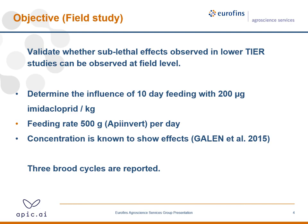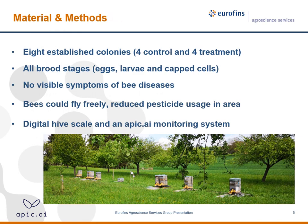We used eight hives and split them into control and treatment groups. The hives had all larval stages — eggs and larval cells. There were no visible symptoms of bee diseases. The bees could fly freely, and in the area where the study was conducted, there was reduced pesticide usage.